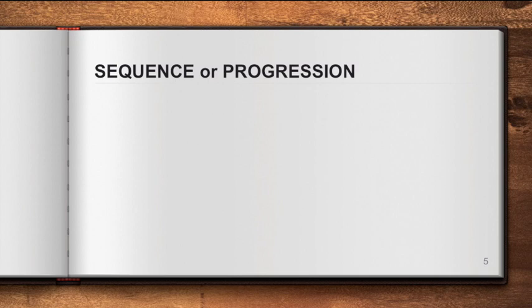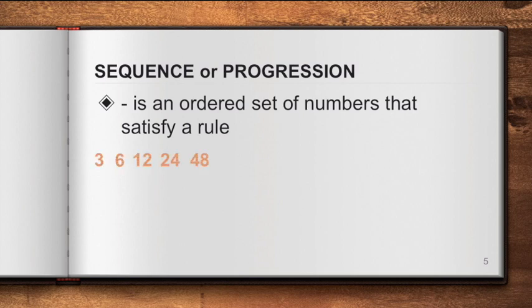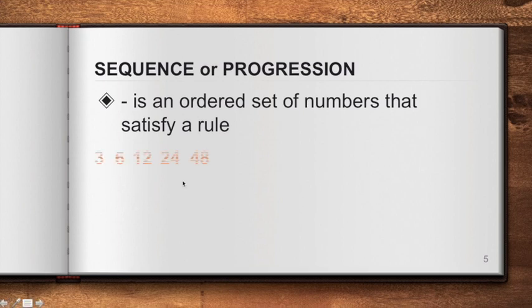A sequence — or another term for that is progression — is an ordered set of numbers that satisfy a rule. There must be a rule that satisfies all of the numbers in that sequence. Let's take a look at this example: 3, 6, 12, 24, and 48. In this sequence of numbers they satisfy a rule. What do you think is the rule behind this?